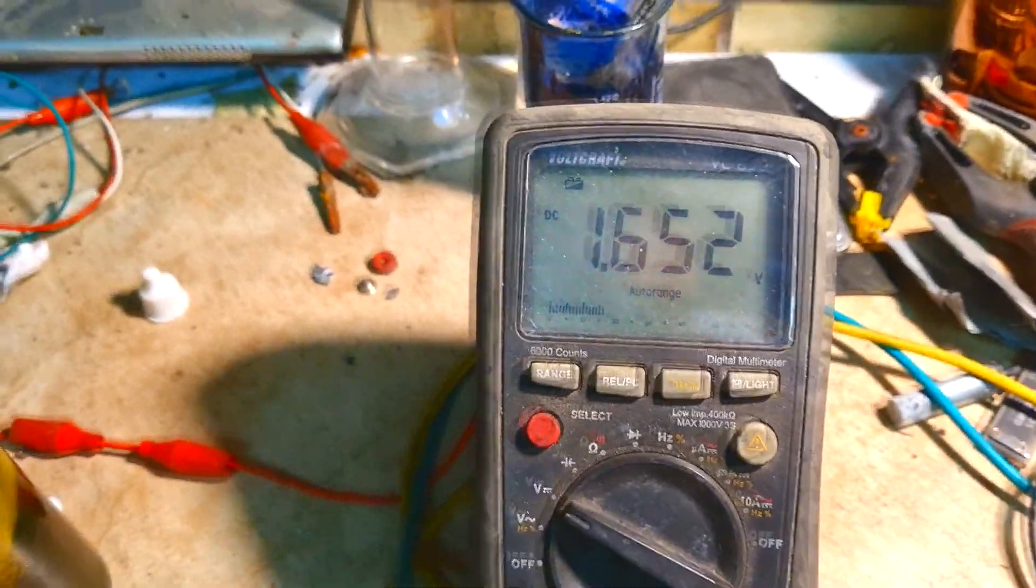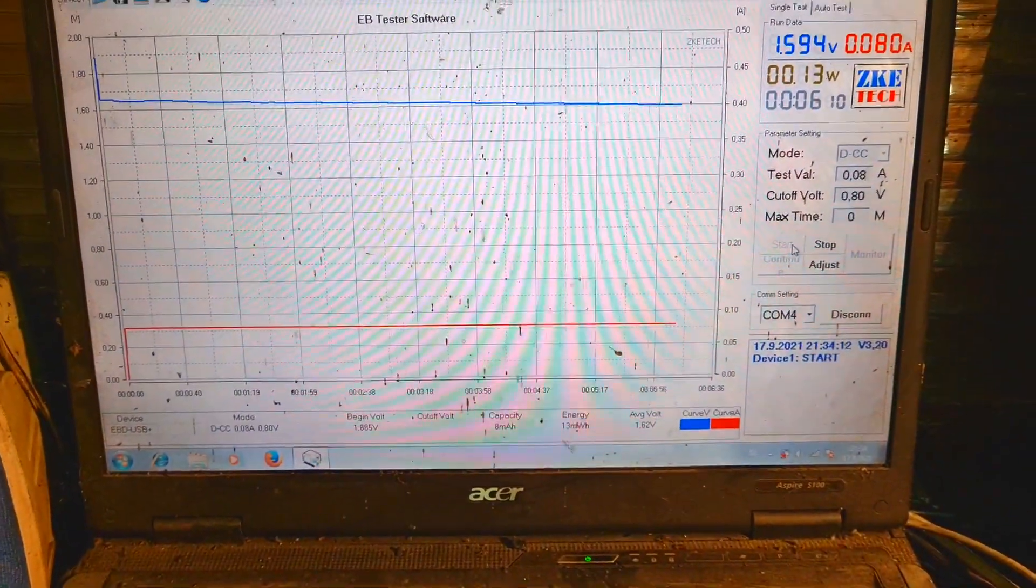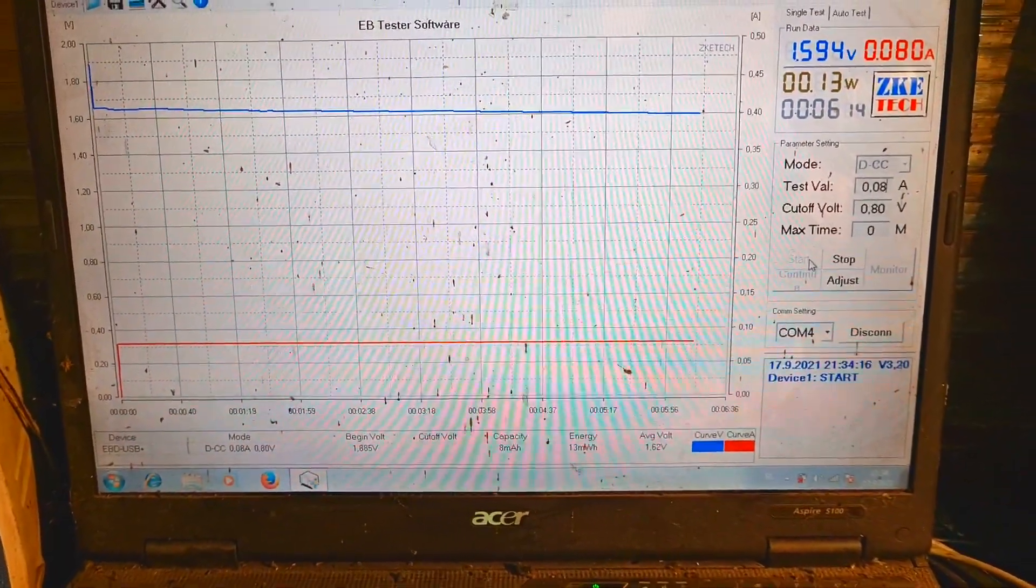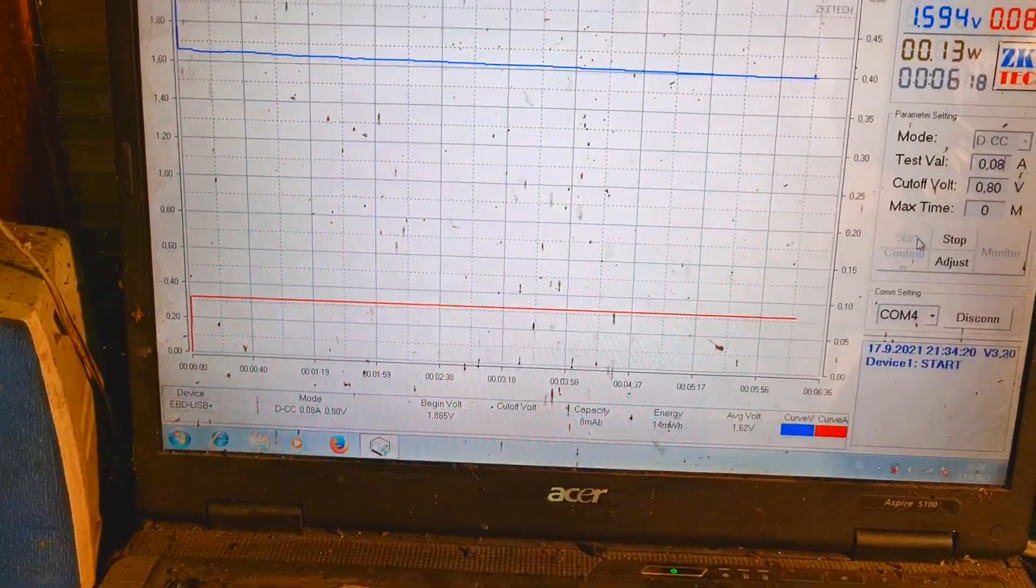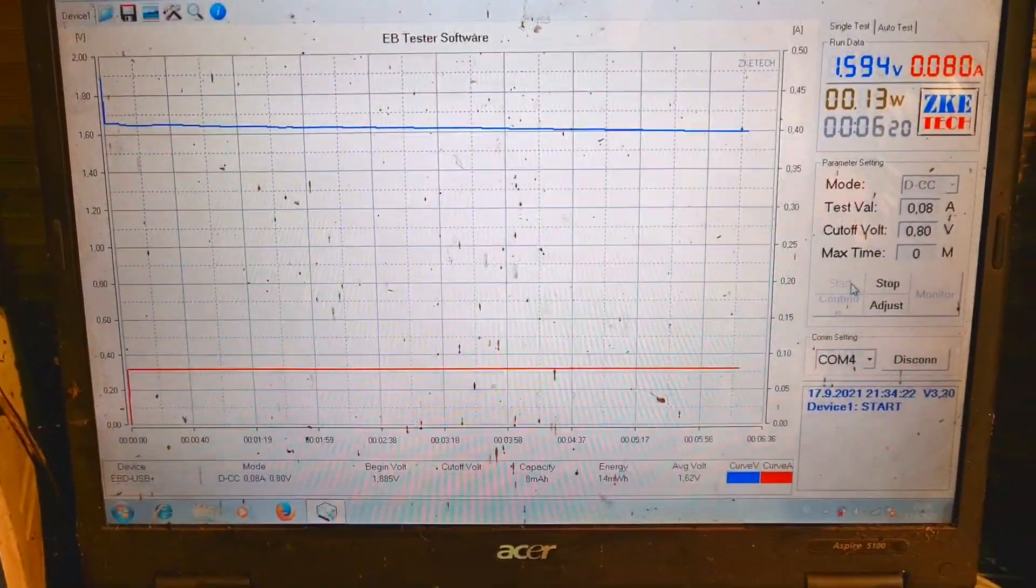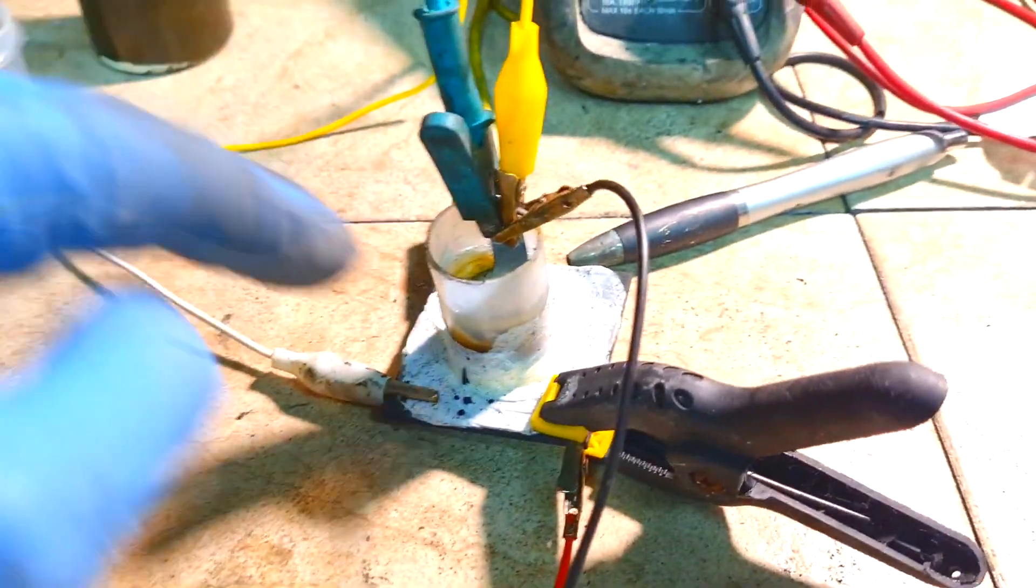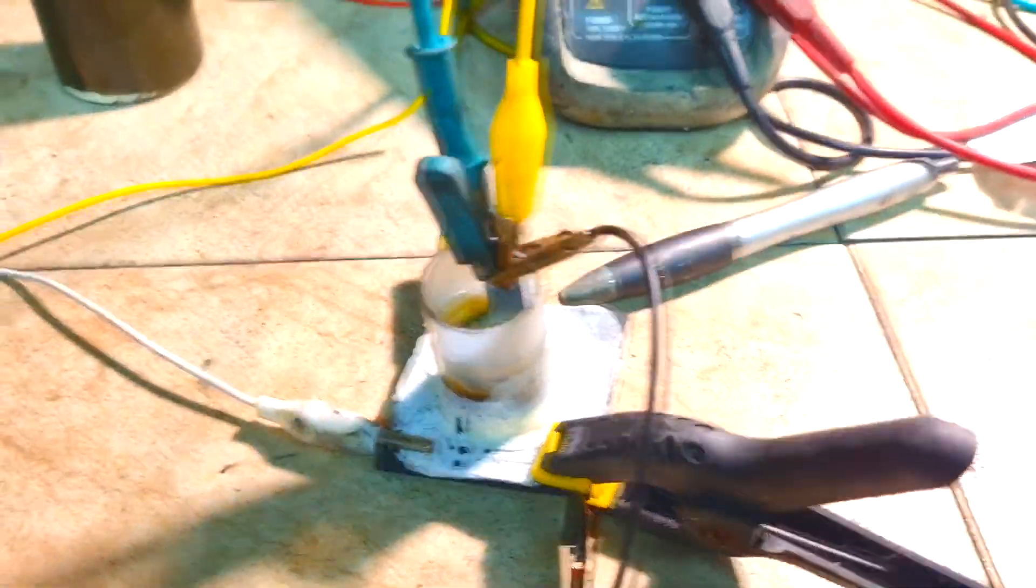This is the current voltage. As you can see, I'm discharging this cell to see what performance I will get out of it. Okay, the discharging of this zinc bromide gravity battery is finished.